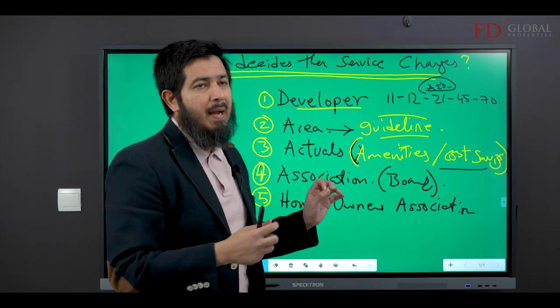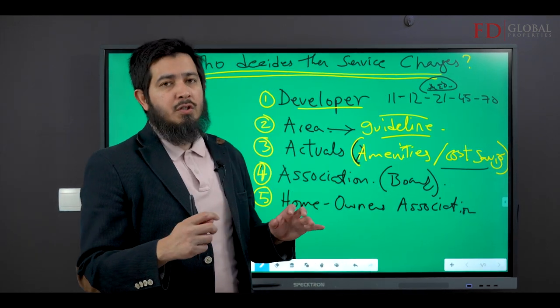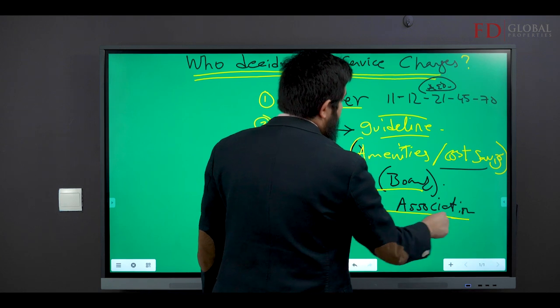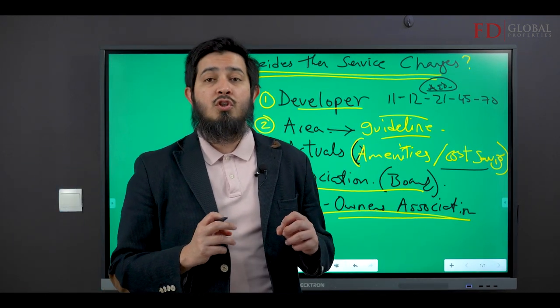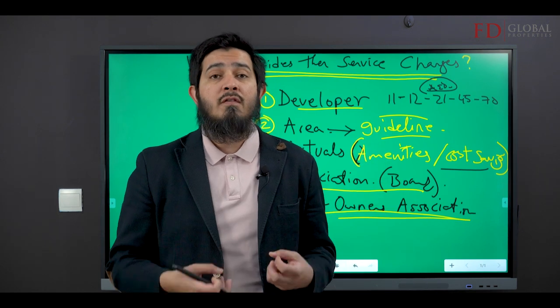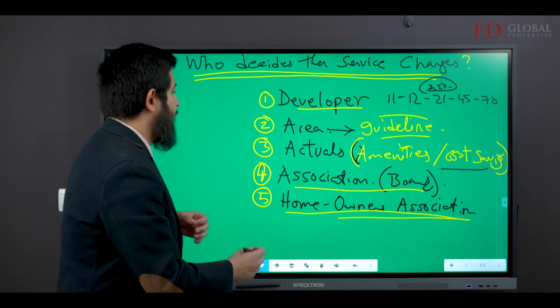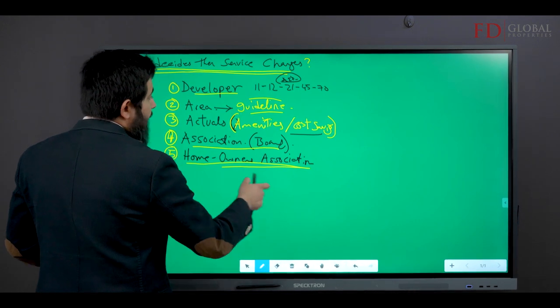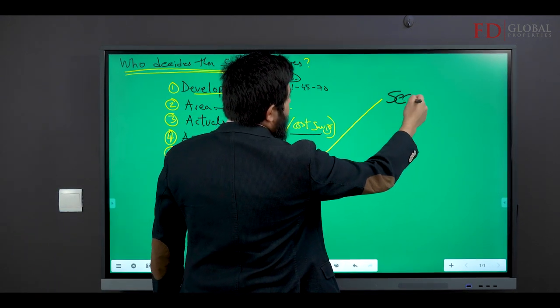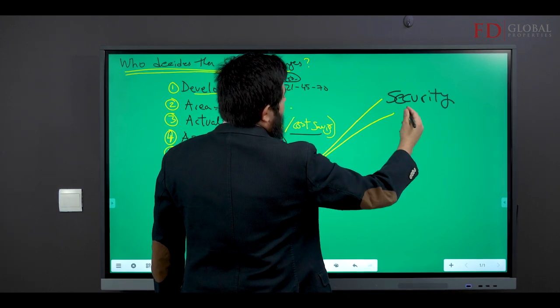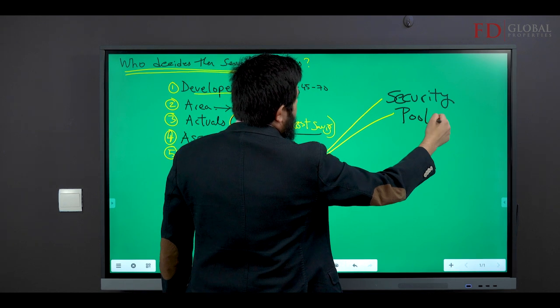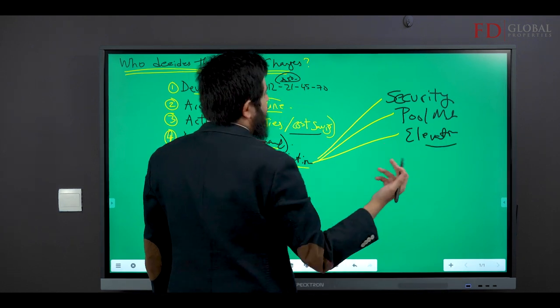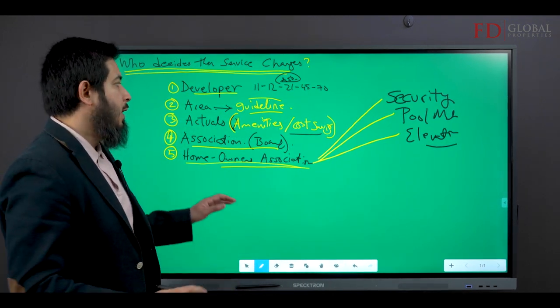How are the service charges decided? A board is set up of the owners that appoints something called a homeowner's association. The homeowners association's job is to go out there and find service providers. They will find a security company that provides security guards, a pool maintenance company, an elevator maintenance company like Mitsubishi, and so on and so forth.